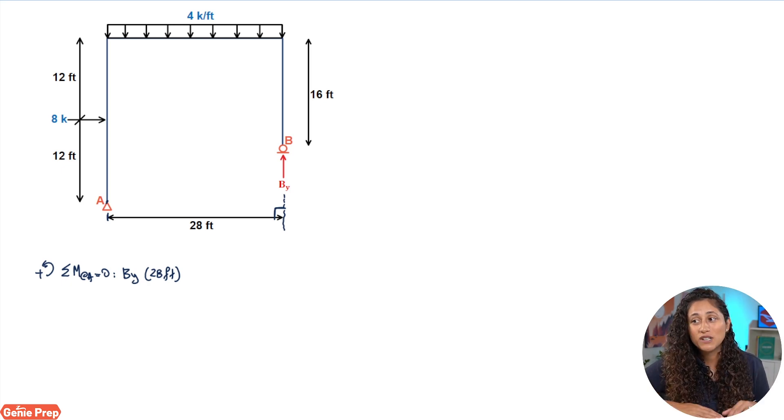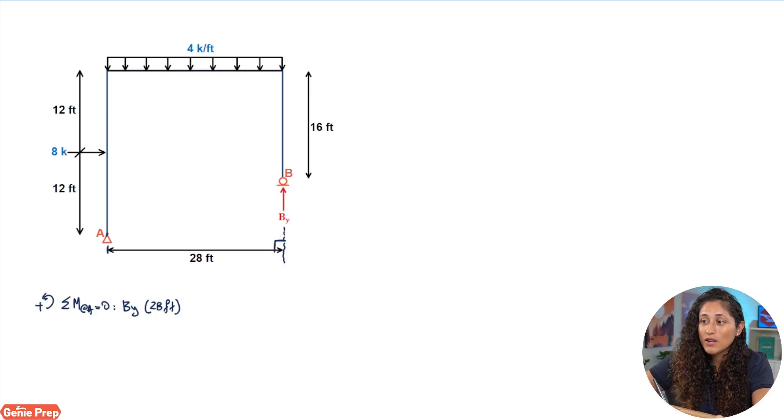Now also note guys that BY is positive because our sign convention is counterclockwise, so we're going counterclockwise, BY we're assuming it's going up so they're going in the same direction, and then we're gonna have minus the distributed load. Now the reason why it's minus, because remember we're taking the moment at A counterclockwise, the distributed load is going down, so they're going opposite of each other, so we're gonna have minus four kips per foot.